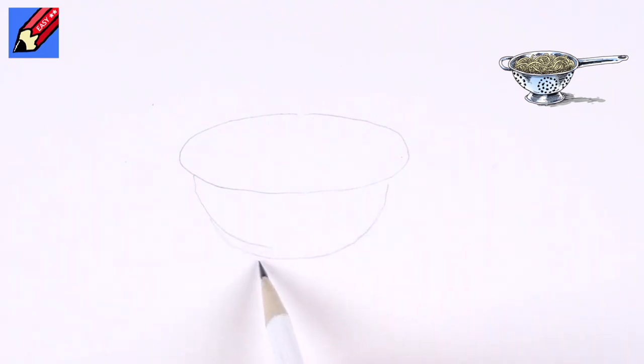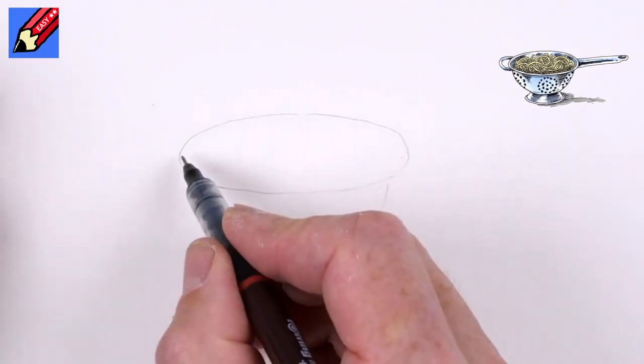Press very gently because you'll want to erase this later and draw two little lines coming out and then another curve underneath it like that. So in ink,